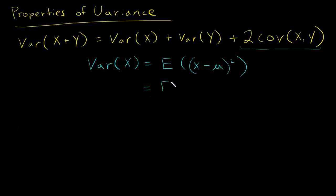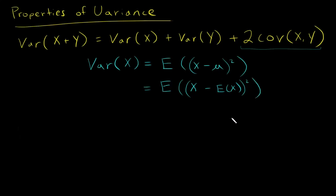I will often write, instead of the Greek letter mu to represent the mean of X, the expected value of X — that's a little clearer notation. The expected value of X and mu are the same thing. So by definition, this is what the variance of X is.